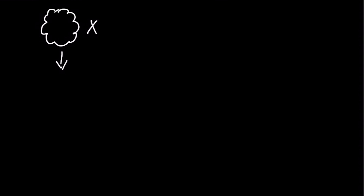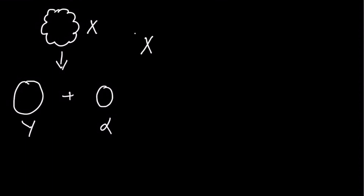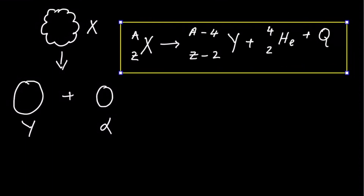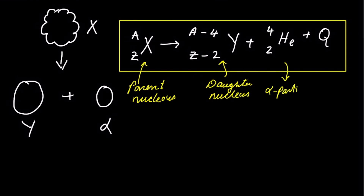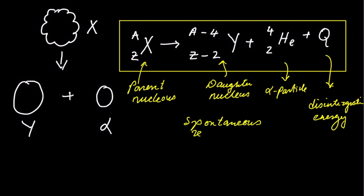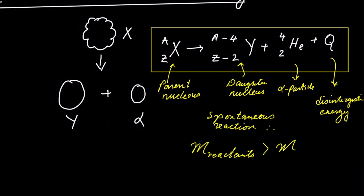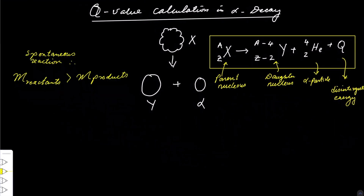Alpha decay is treated in the same manner, where we get an atomic nucleus X decaying into a daughter nucleus Y and an alpha particle, which is just a helium atom. In the general expression, X is the parent nucleus, Y is the daughter nucleus, and the helium atom is the alpha particle; Q is again called the disintegration energy. This is also an example of a spontaneous reaction, so we can deduce that the mass of the reactants must be greater than the mass of the products.